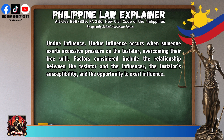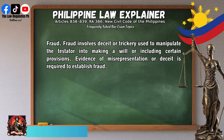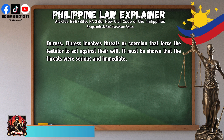Fraud involves deceit or trickery used to manipulate the testator into making a will or including certain provisions. Evidence of misrepresentation or deceit is required to establish fraud. Duress involves threats or coercion that force the testator to act against their will. It must be shown that the threats were serious and immediate.